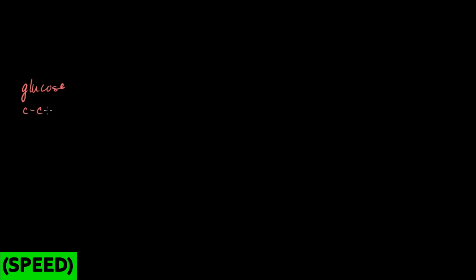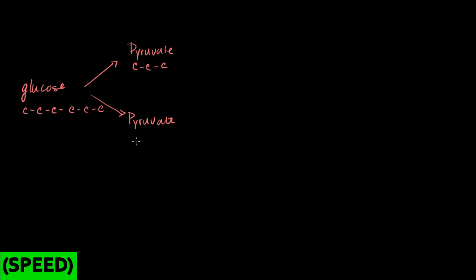We already know that if we start off with a glucose molecule, which is a 6-carbon molecule, that this essentially gets split in half by glycolysis, and we end up with 2 pyruvic acids, or 2 pyruvate molecules. So glycolysis literally splits this in half, it lyses the glucose, and we end up with 2 pyruvates, or pyruvic acids. Pyruvate — and these are 3-carbon molecules.